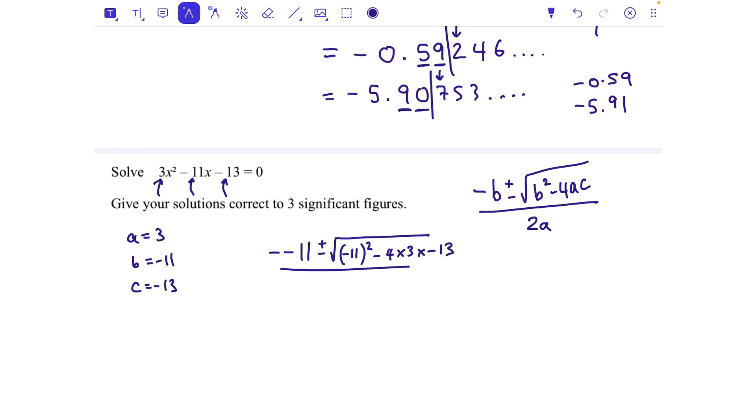Typing that in my calculator, I've got a fraction button first, 11 plus - I'm going to use first - the square root of minus 11 squared or just 11 squared, minus 4 times 3 times minus 13, all over 2 times 3. And that is 4.6072. So for three significant figures we start counting from the beginning of the number: one, two, three, chop, check the next number. It rounds up, so 4.61 is my first solution.